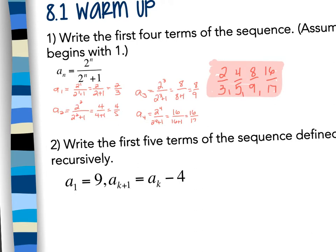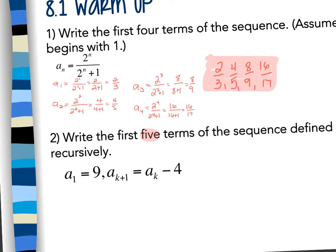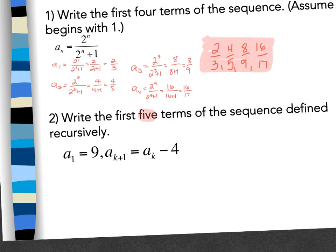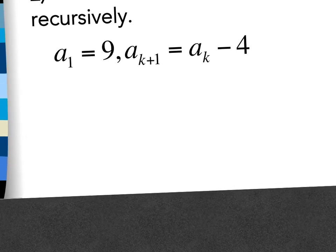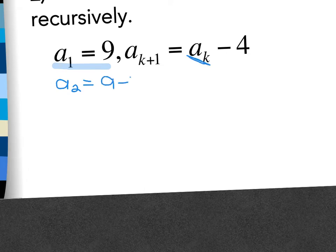Number 2 says find the first 5 terms of the sequence that's defined recursively. So remember recursively the term in the sequence relies on knowing the term before it. So if I have a sub 1 that's the first term, a sub 2 would be the second and I would take a sub 1, the one before it, minus 4. So this would be 9 minus 4 which is 5.